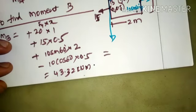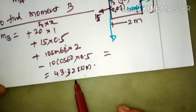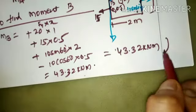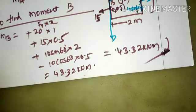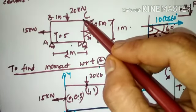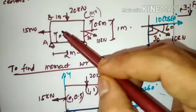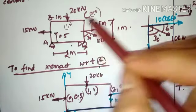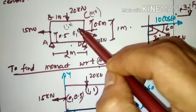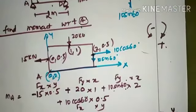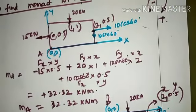The unit of moment is kNm and the value is 43.32 kNm, which is positive, so the direction of rotation is clockwise. Briefly, for moment with respect to C, C becomes the origin at (0,0), the 20 kN force is at (1,0), the inclined force location is at (2, 0.5), and the 15 kN force location is at (0, 0.5).